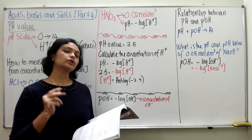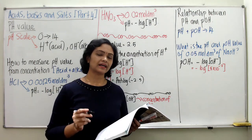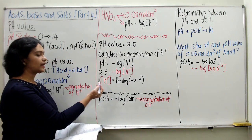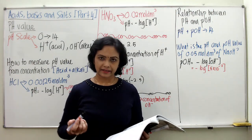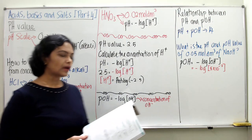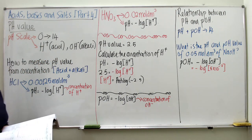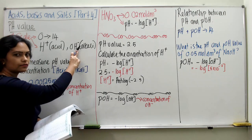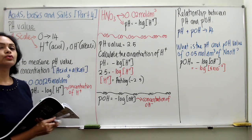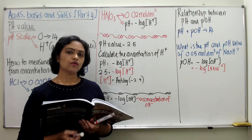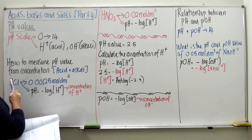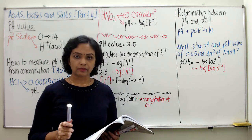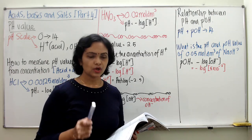This video is going to be on calculation, so I hope you have your calculators ready. You need to know how to use the Log and Antilog functions on your scientific calculator. We are going to learn how to find the pH value from a given concentration for both Acid and Alkaline.